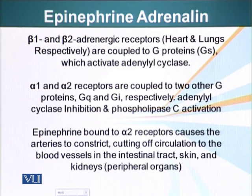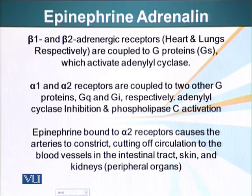For example, when a mouse sees a cat, adrenaline is released. It will have more blood available to the muscles because the peripheral organ supply has been cut. Blood will have more oxygen because the smooth muscles in the lungs have relaxed and more air can be taken in. The liver releases more glucose — the fuel for muscle cells — and the heart pumps more blood into the muscles because its rate of contraction has been increased.